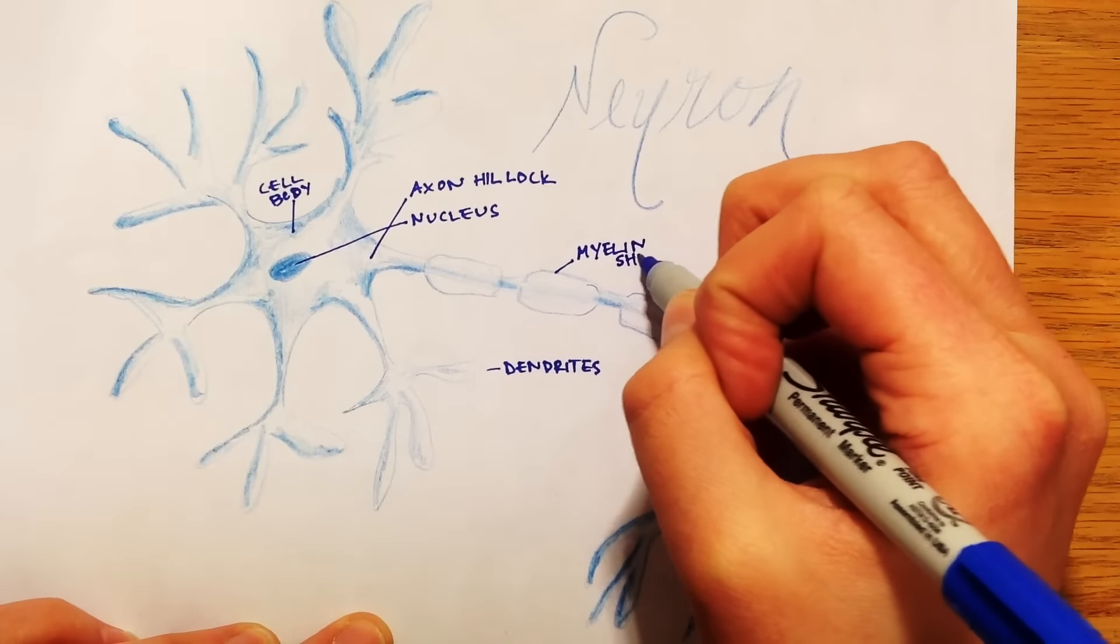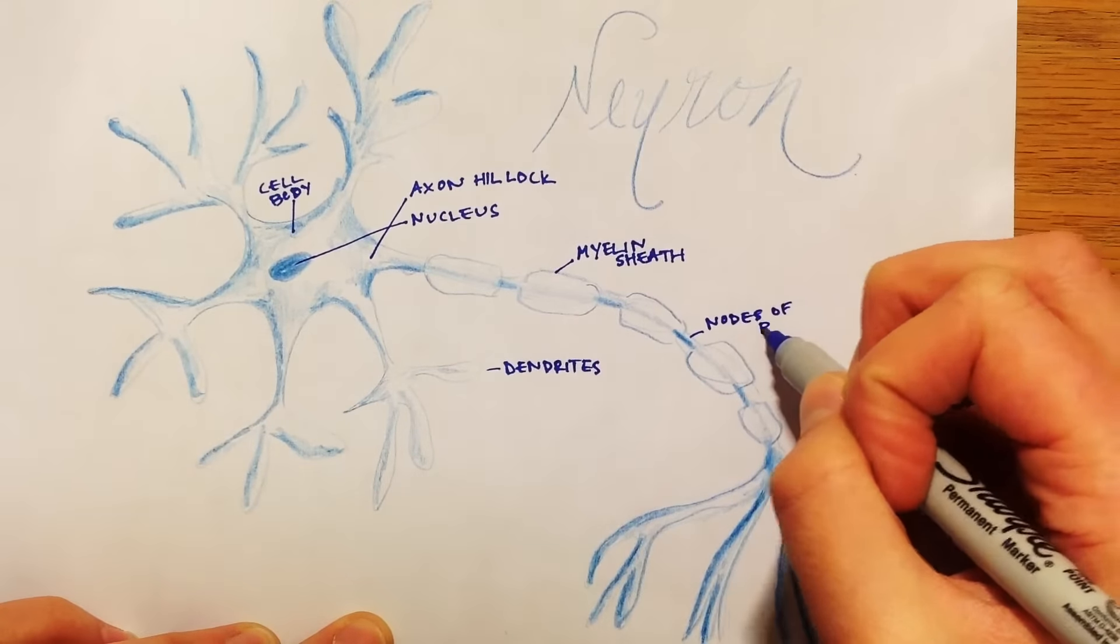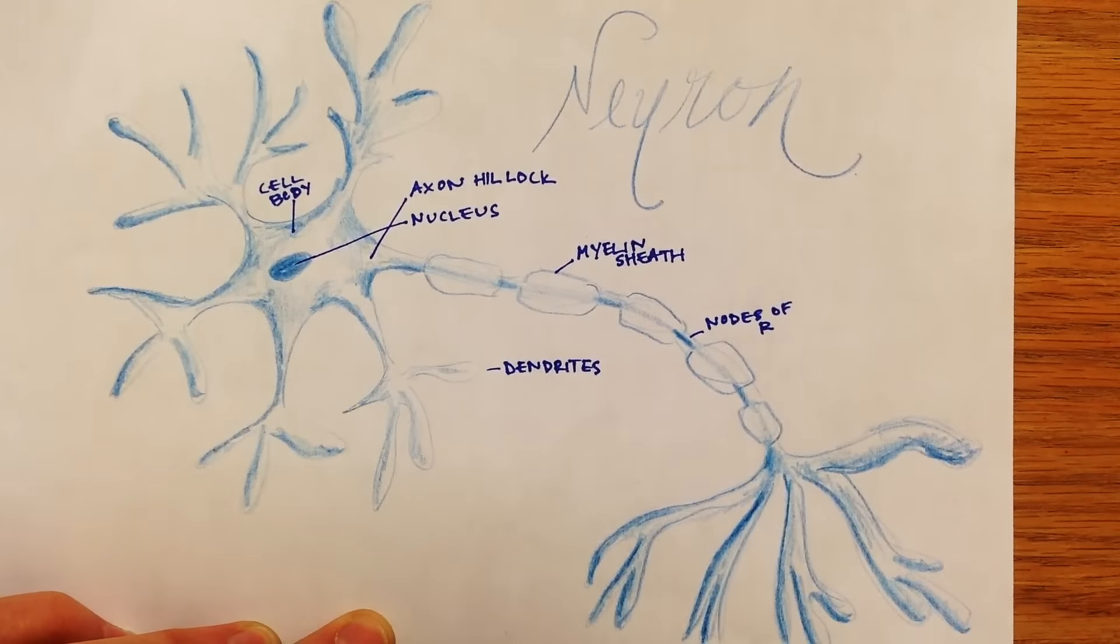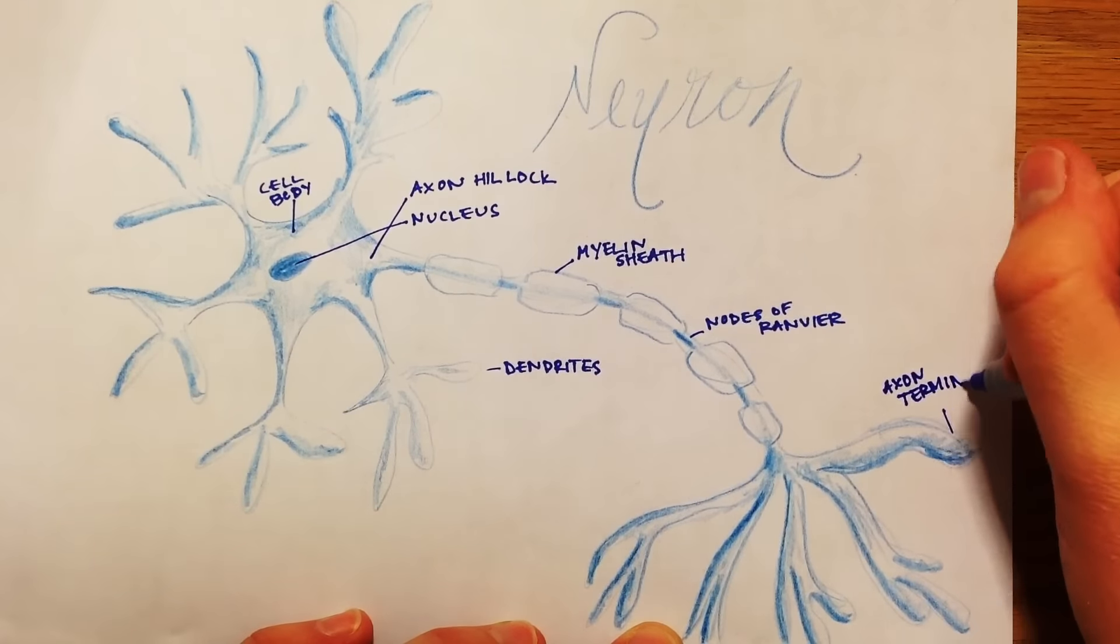The myelin sheath which is helping with conductance down the axon, then the nodes of Ranvier which are in between the myelin sheath down the axon, and then at the very end of the axon we have those finger-like structures with the axon terminals.